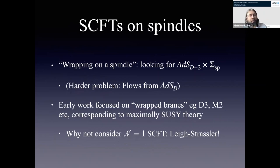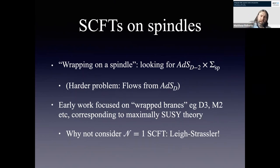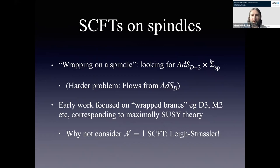With this in mind, the game we want to play is wrapping some strongly coupled field theories, modeled holographically, on a spindle. If I have a system that is usually D-dimensional AdS, I look for solutions of the form: a lower-dimensional anti-de Sitter space times some spindle, with U(1) gauge fields appropriately quantized on the spindle. Usually when we look for such solutions, we take sigma to be a Riemann surface or a sphere — something locally maximally symmetric — so we don't have to worry about coordinate dependence on the internal manifold.